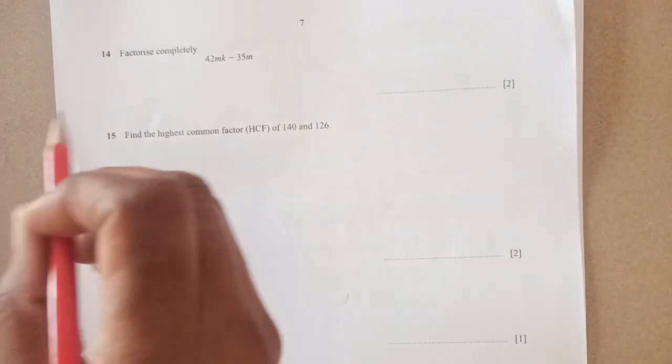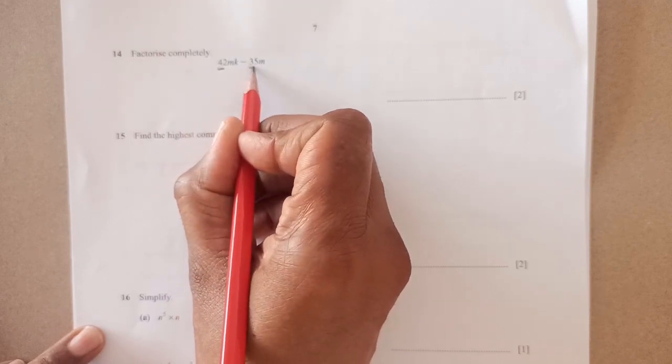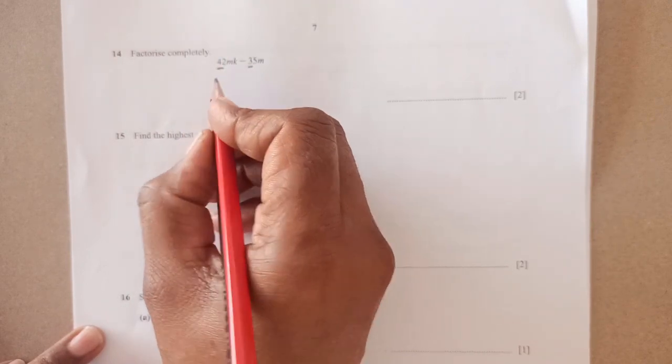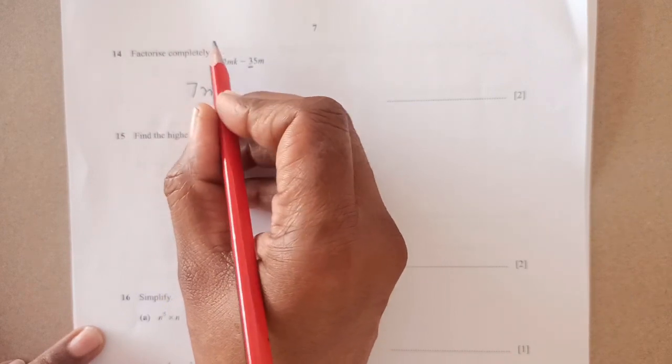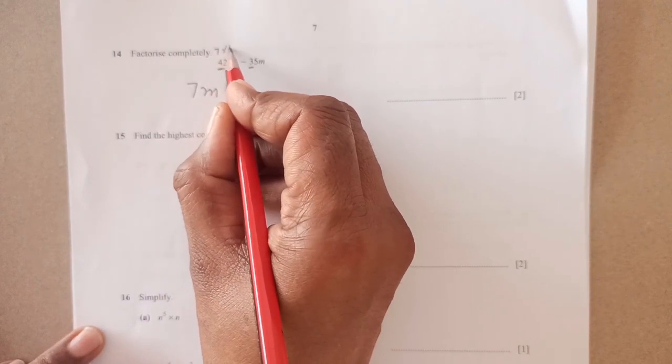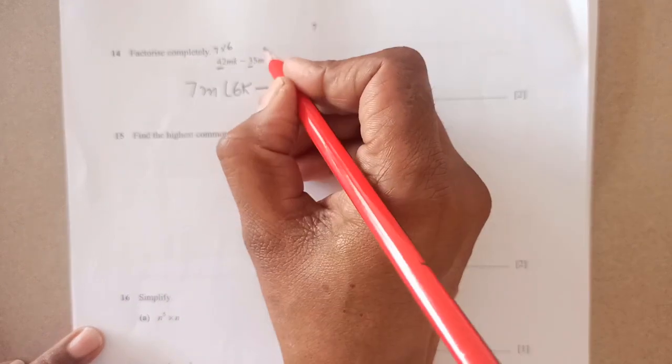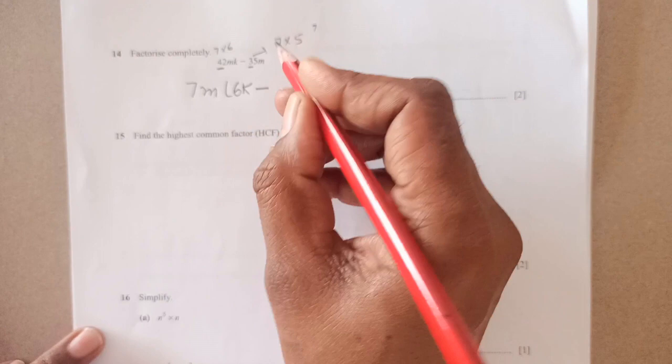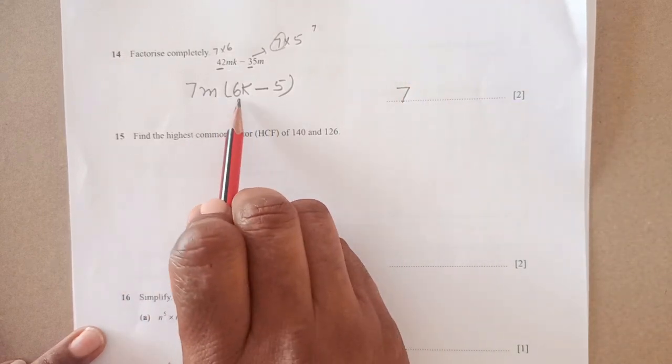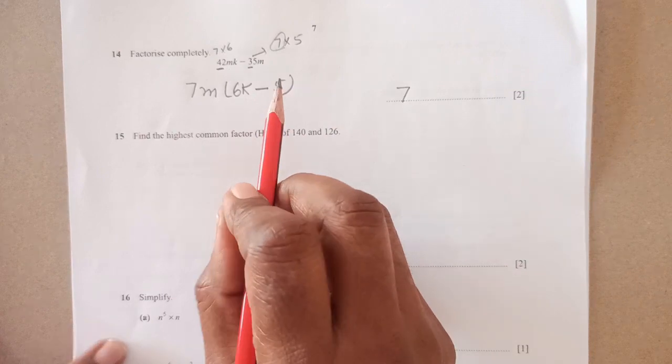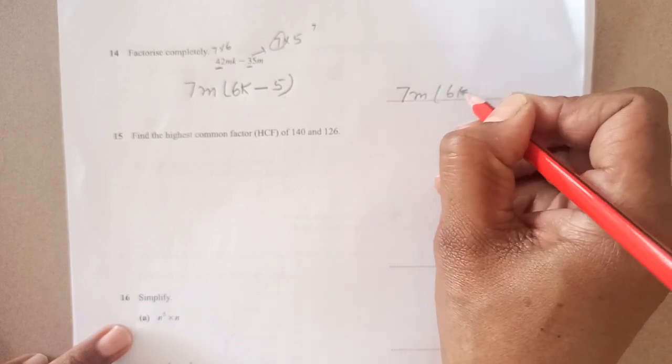Let us start. Question 14: factorize completely. First, whenever you factorize, you look at the numbers - 42 and 35, both are multiples of 7. So 7 is common. Then M is common here. When you do this, 7 times 6 is 42, so 7 is out, inside we're left with 6. M is gone, then we have K here, minus. Similarly, 35 is 7 times 5, so 7 is out and we have 5 inside the bracket. Final answer is 7M(6K - 5).